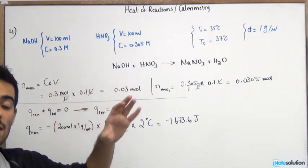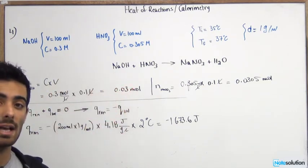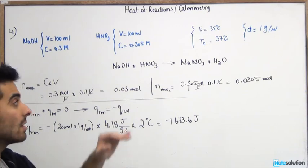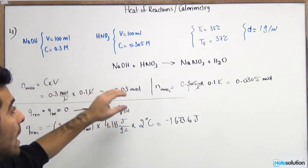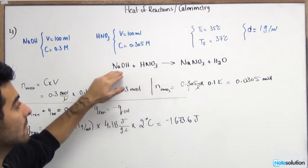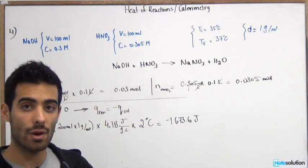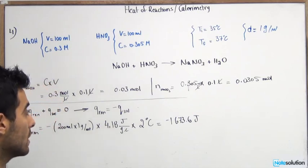Remember that the reaction sometimes has excess and sometimes has the reactants in the same quantity. In this reaction we have HNO3 in excess and limiting reactant NaOH. You always use the limiting reactant in your calculations.